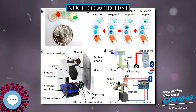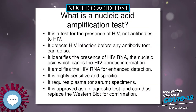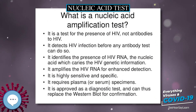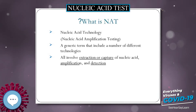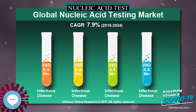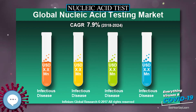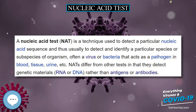Detection of genetic materials allows an early diagnosis of a disease, because the detection of antigens and/or antibodies requires time for them to start appearing in the bloodstream. Since the amount of a certain genetic material is usually very small, many NATs include a step that amplifies the genetic material — that is, makes many copies of it.